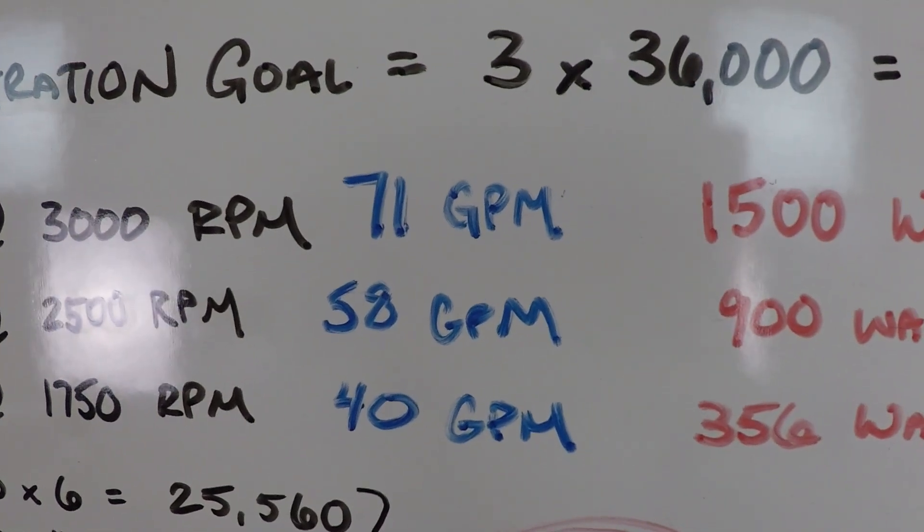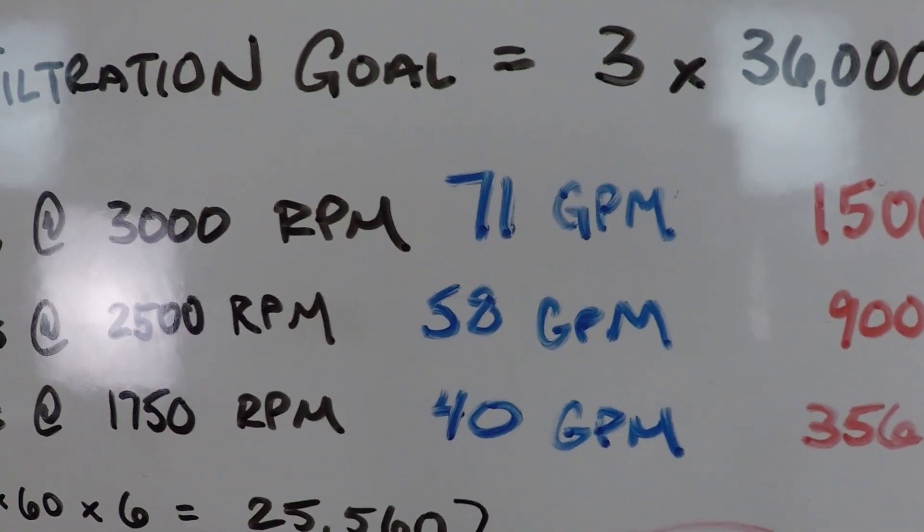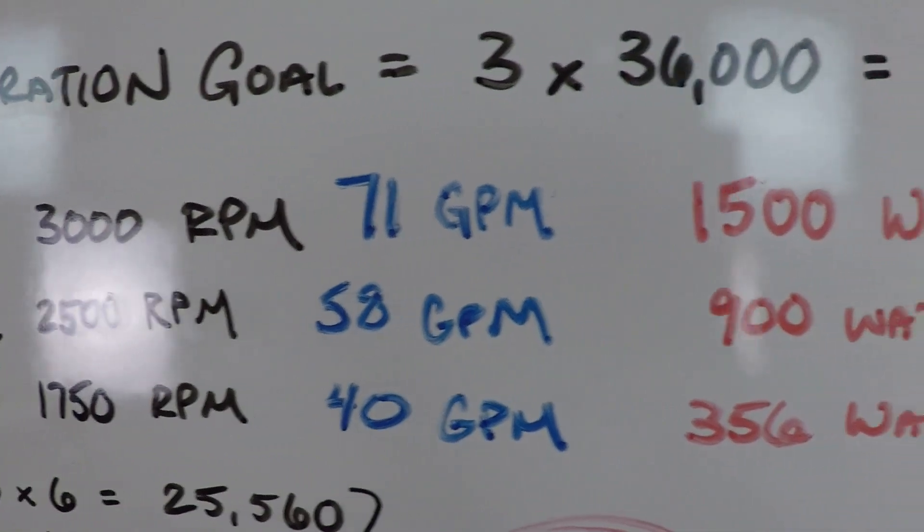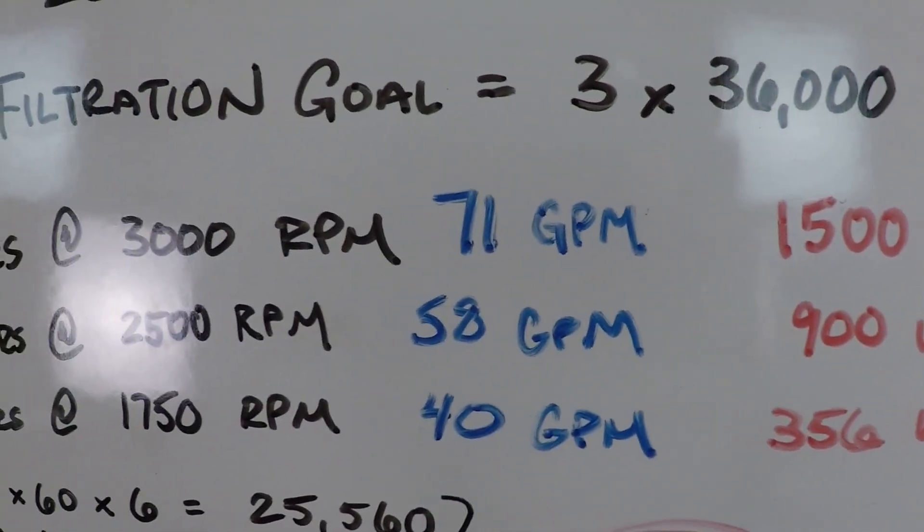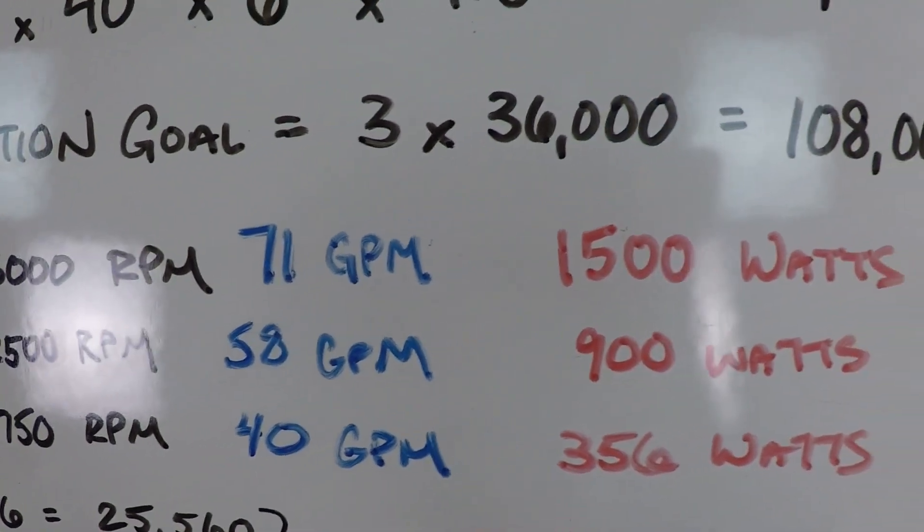Here's the volume that we have for each of those rpm settings and the wattage. So that's 71 gallons per minute at 3000 rpm, 1500 watts.